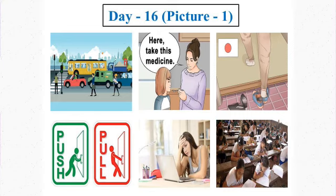So we can say they should stop. The man, he should cross the road, because you can see the green light for him. So he should cross the road. The cars, they should stop, and the man, he should cross the road.